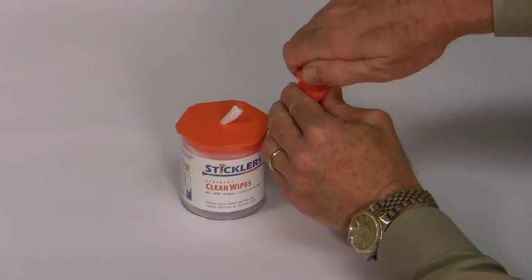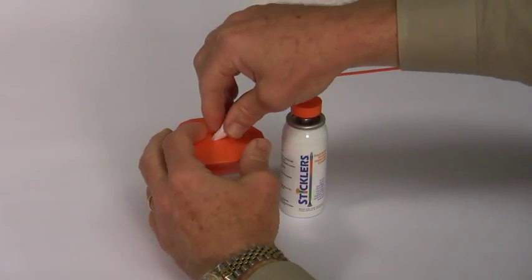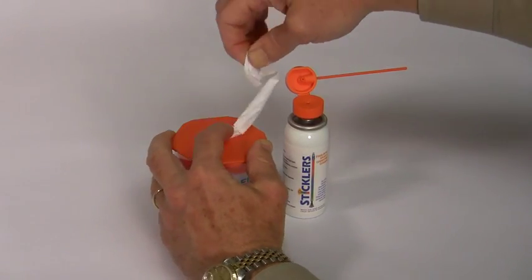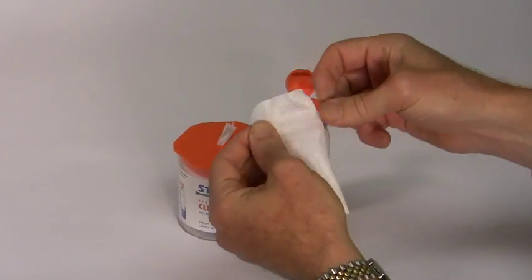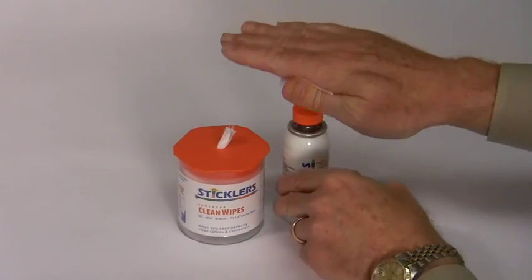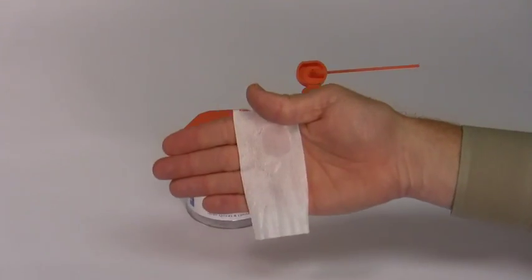For hands-free dispensing, flip open the Triton cap to reveal the solvent saucer. Then gently press the fabric on the solvent saucer to dispense fluid. This effectively gives you the utility of an extra hand.